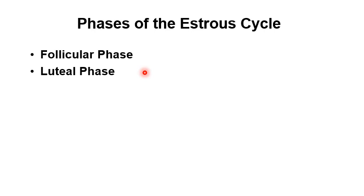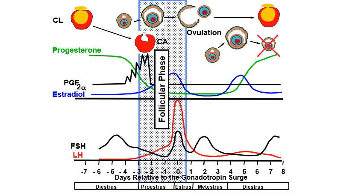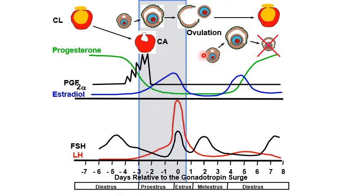There are two major phases of the estrous cycle: the follicular phase and the luteal phase. The follicular phase encompasses proestrus and estrus, corresponding to the time when the follicle grows until ovulation. Other follicles grow at other times but become atretic — 95% or more of follicles will undergo atresia. During the follicular phase, the CL from the previous cycle is regressing and becomes the corpus albicans.